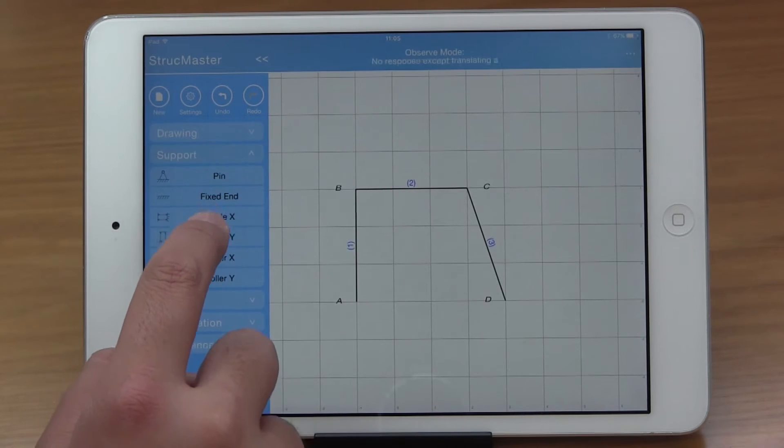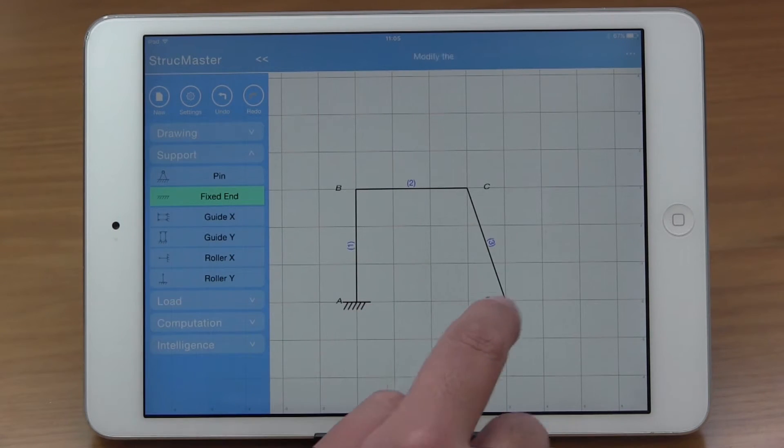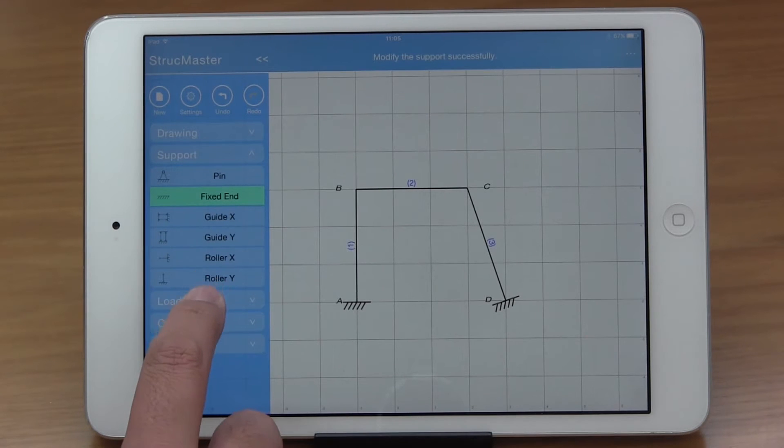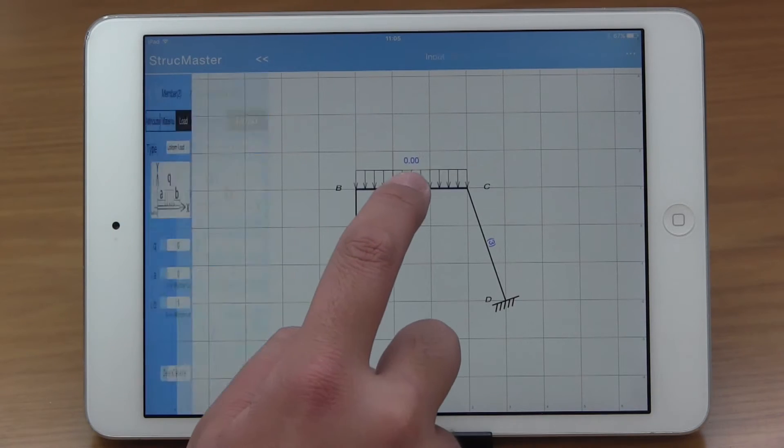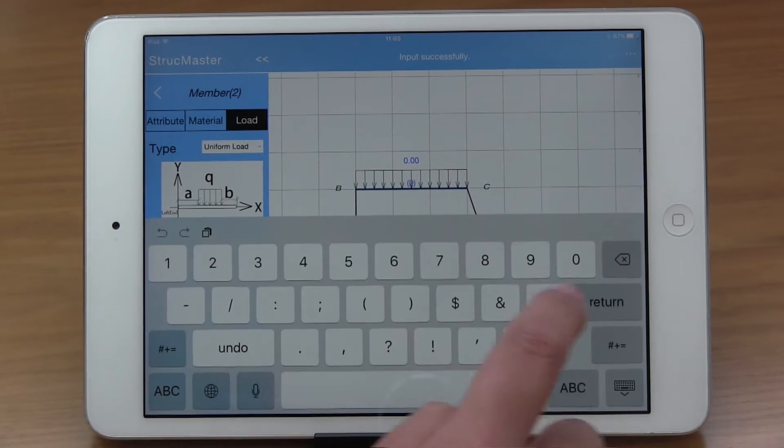Of course, the most convenient way is to use the support button to add supports to joints, and use the load button to add loads to members.